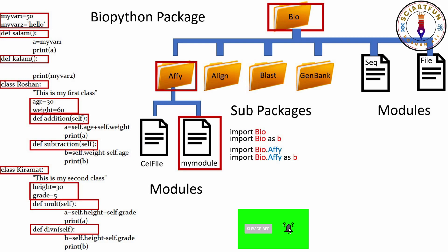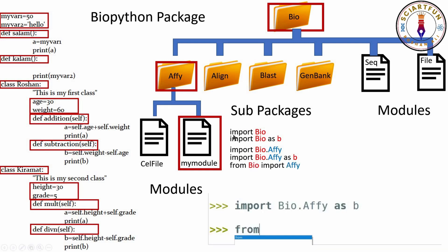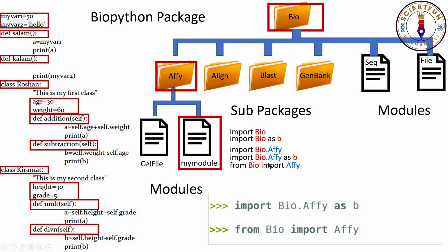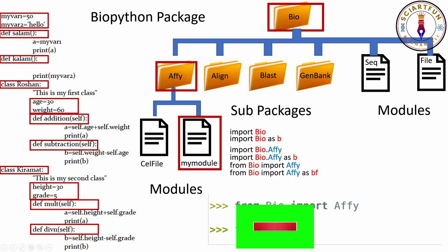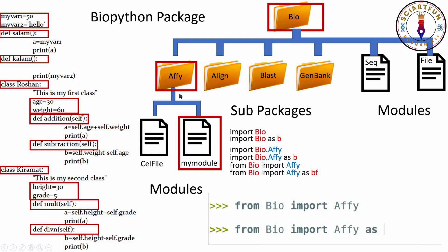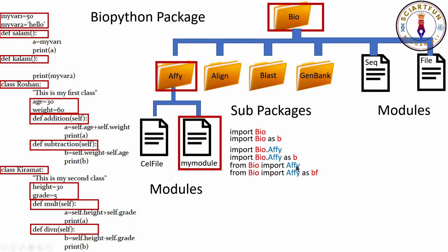Now let's look at the from-import method, which is a little different. With this method, you type 'from Bio import Align', 'from Bio import Blast', 'from Bio import SeqIO', etc. It means from the main package, we want to import that specific subpackage. You can also add an alias: 'from Bio import Align as bf', so whenever you want to use the Align package, you type bf instead.